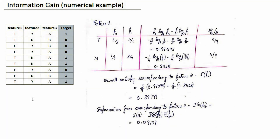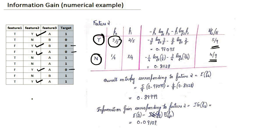We now consider Feature 2, which again has two distinct values: yes and no. Yes has 5 occurrences and no has 4 occurrences out of 9. Out of the 5 yes occurrences, 3 are negative (probability 3/5) and 2 are positive (probability 2/5). For the no scenario, the negative class occurs once and the positive class occurs 3 times. We use the same entropy formula and compute the overall entropy for Feature 2. Following the same procedure as Feature 1, we get the information gain corresponding to Feature 2, which is much less than that of Feature 1.